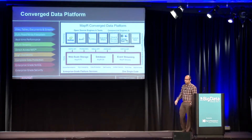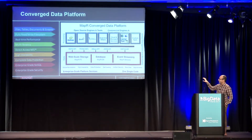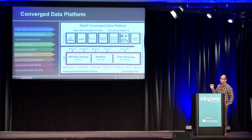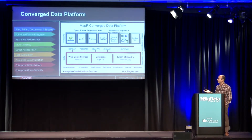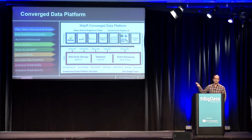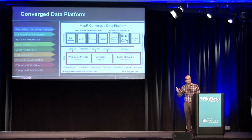Everything in the MAPR platform is written in C and C++, whereas in the open source world everything is written in Java. So in the platform itself we avoid Java garbage collection and performance overhead, giving better performance compared to open source HDFS, HBase, or Kafka.